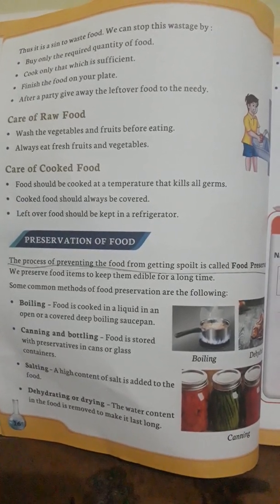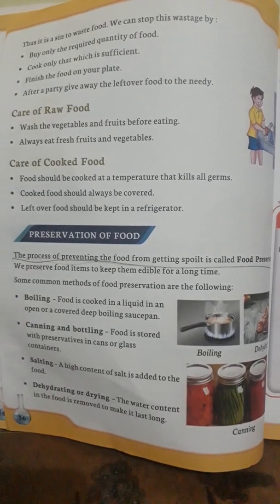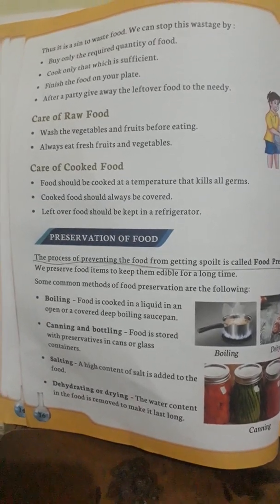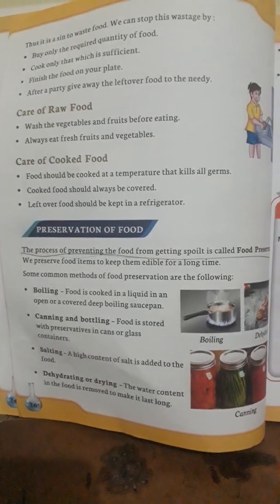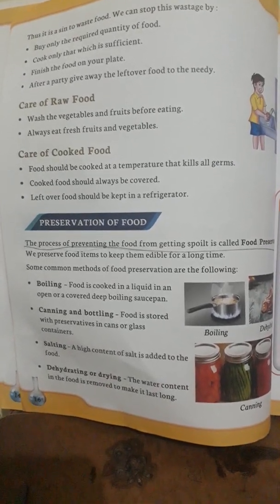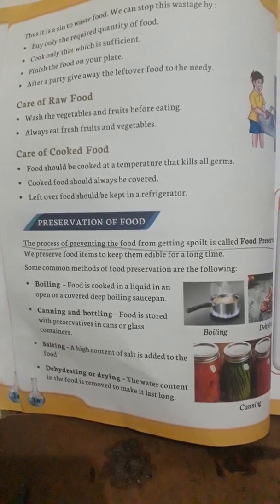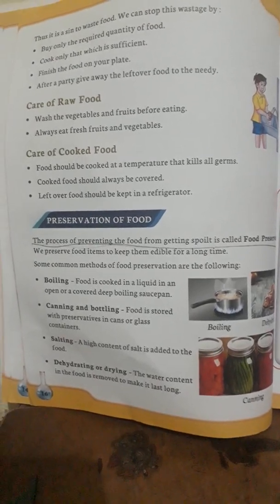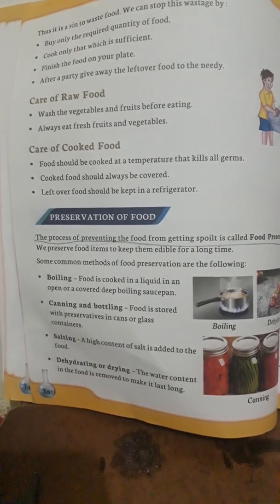The next method is salting. It is the oldest food preservation method, where a high content of salt is added to the food. The fourth process is dehydrating or drying — removing the moisture fully from the food item, which does not give any chance for bacteria to grow.